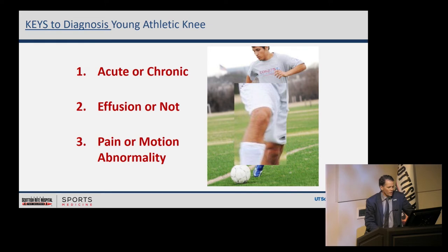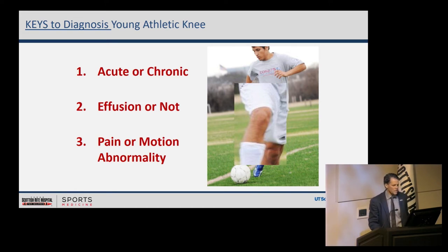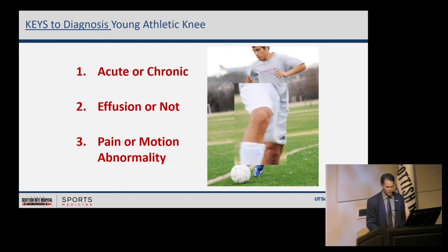Break down the history into an acute versus a chronic presentation — that really helps initially divide our possible diagnoses. Then on physical examination or by history, did they have an effusion or not? And then, both by history and exam, is it a primary pain problem or a primary motion abnormality? If we can categorize the presentation and exam into these three categories, it really assists us in breaking down that long list into a more manageable list.